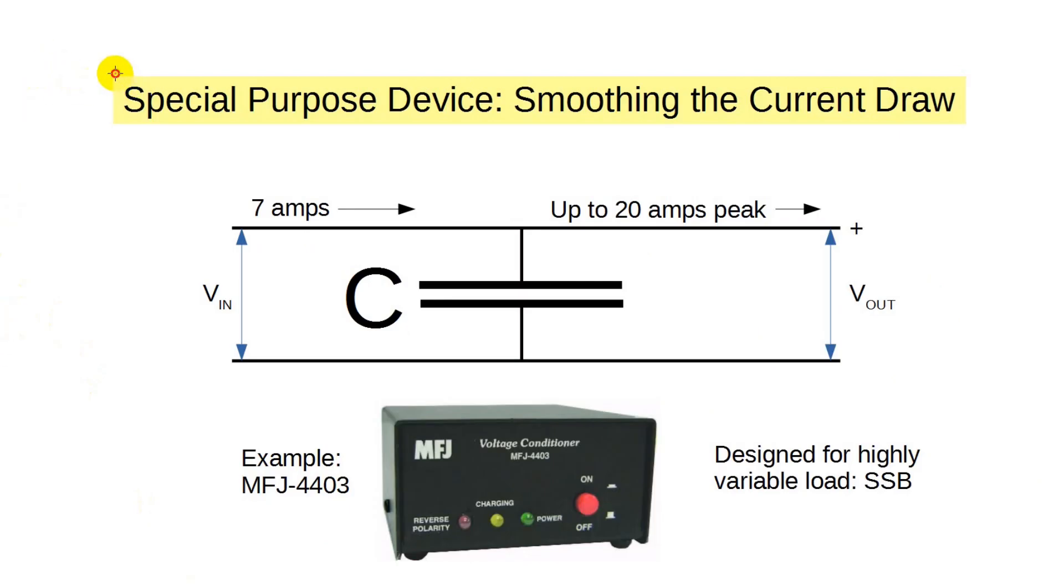Now, a couple gadgets have shown up on the market that can be called power supply adjuncts or power supply accessories. The first, shown here, consists essentially of a huge capacitor. Actually, several capacitors wired in parallel. The idea is that since the SSB load is so highly variable, use the big capacitor as the source of current for the peaks and let the input supply keep the capacitor charged during the time between the peaks.